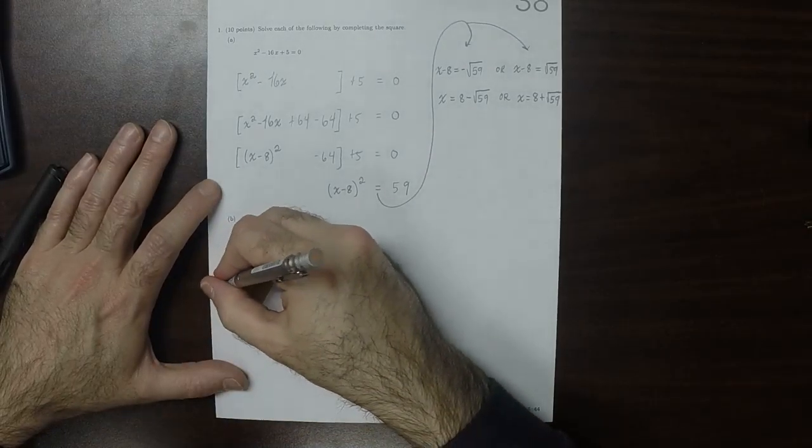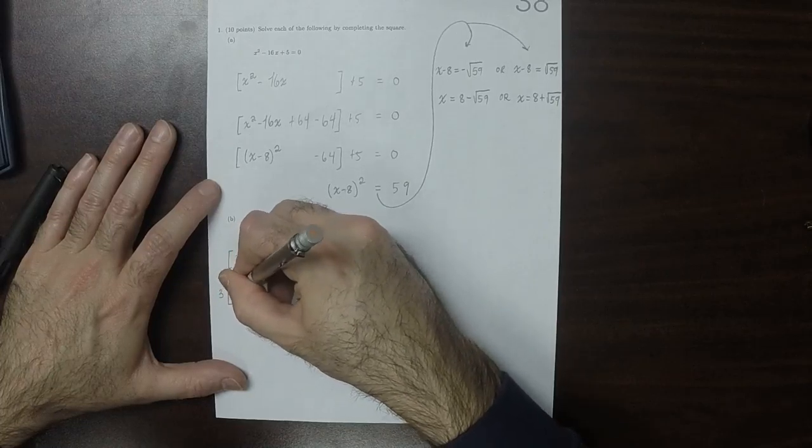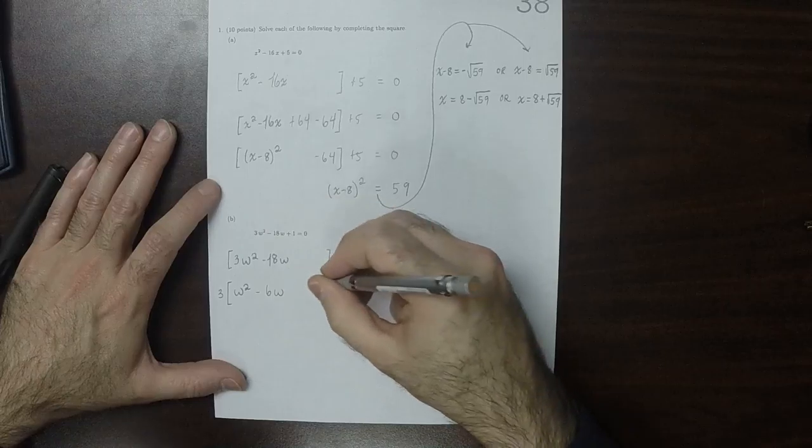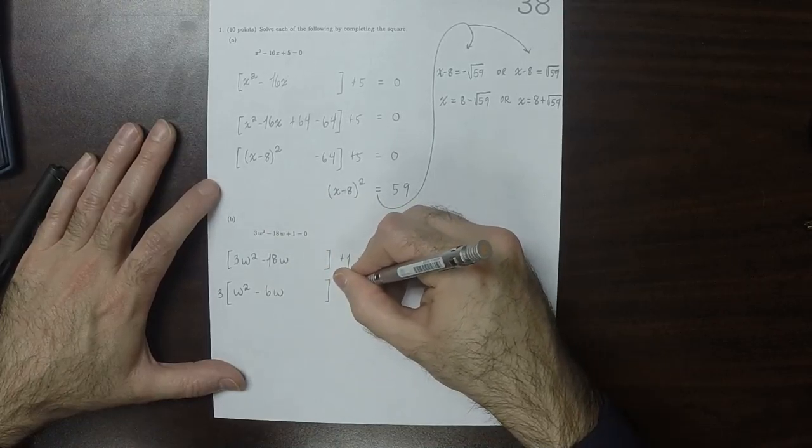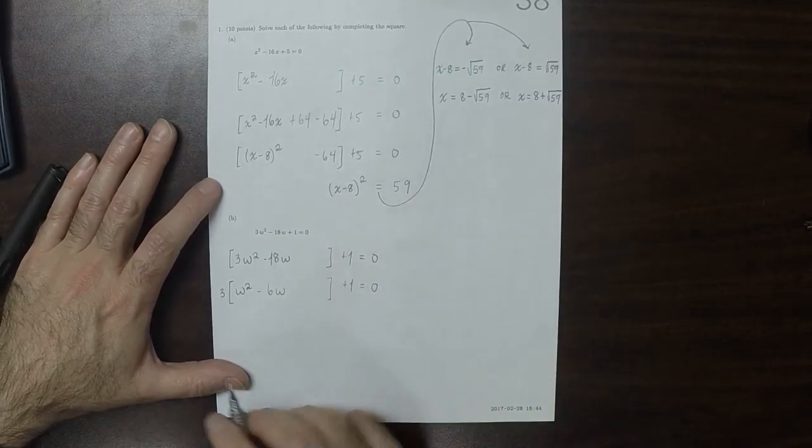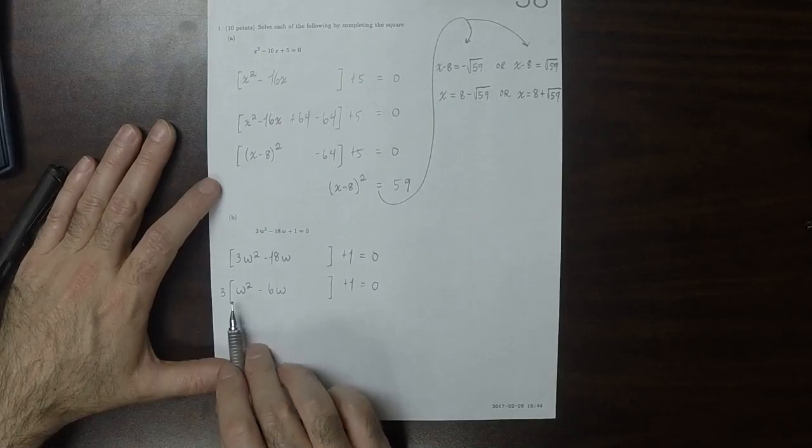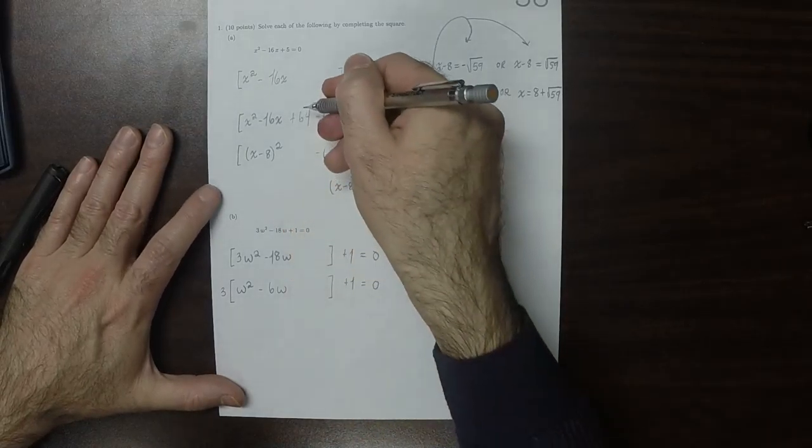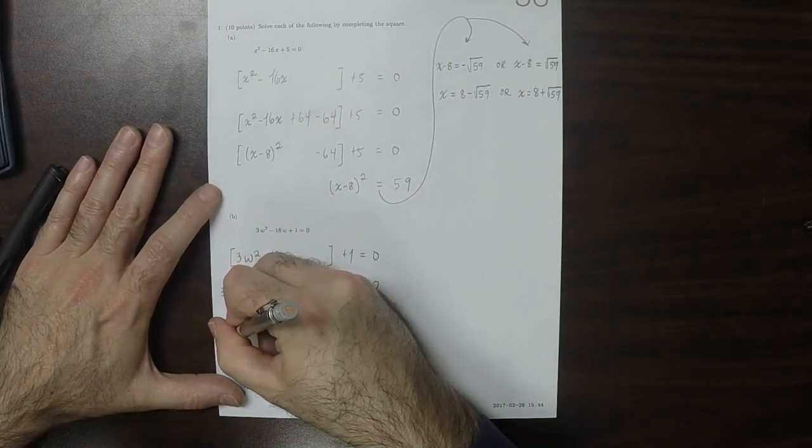Now I'll factor out the 3, so that we have w squared minus 6w. So now this polynomial inside the square parentheses is monic, which is what we need to do to do our complete the square trick.